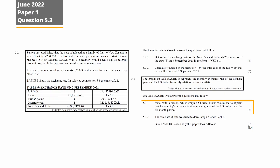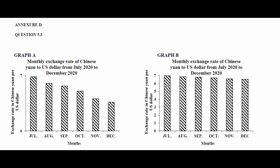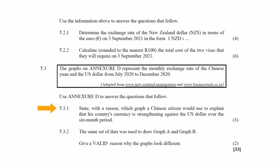Question 5.3 consists of two questions assessing your understanding of data handling in relation to data representation. You are presented with two graphs representing the monthly exchange rate of the Chinese Yuan to the US dollar from July 2020 to December 2020. In question 5.3.1, you have to state with a reason which graph a Chinese citizen would use to explain that his country's currency is strengthening against the US dollar over a six-month period.